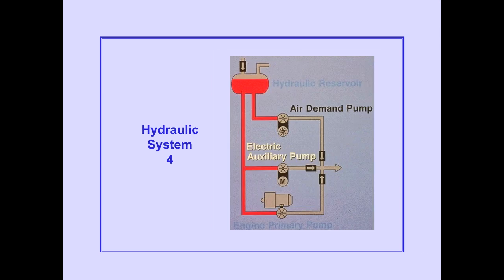Like system 1, system 4 has a bleed air demand pump. System 4 also has an electric auxiliary pump. The auxiliary pump is used only for ground operations.